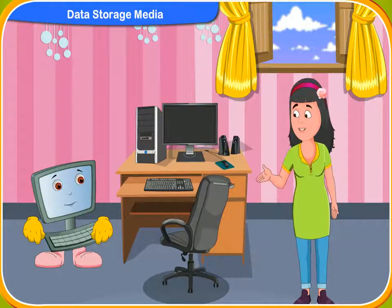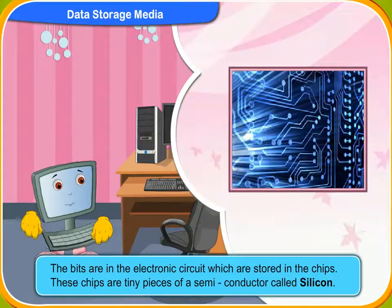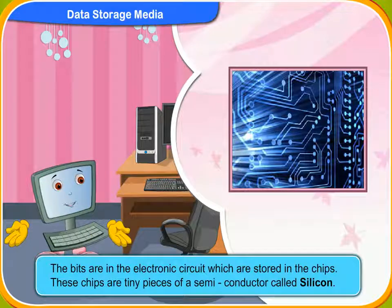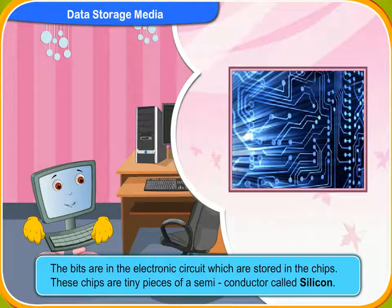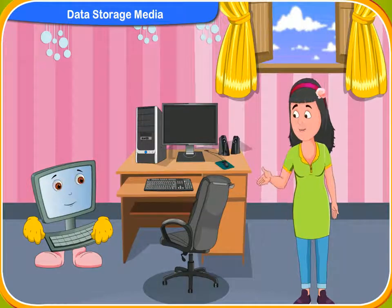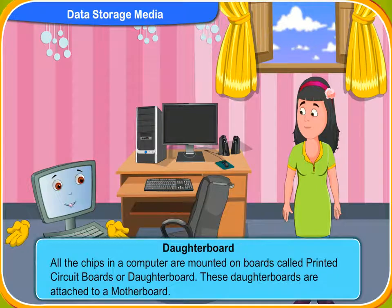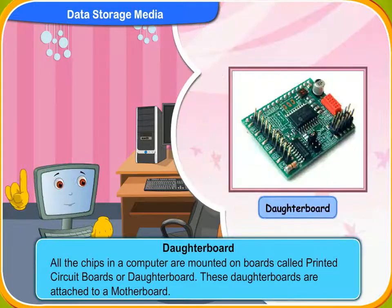Where are these bits found in the computer? The bits are in the electronic circuits which are stored in the chips. These chips are tiny pieces of semiconductor called silicon. Millions of circuits are assembled on each chip. All the chips in a computer are mounted on boards called printed circuit boards or daughter boards.